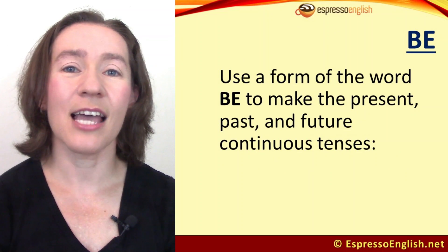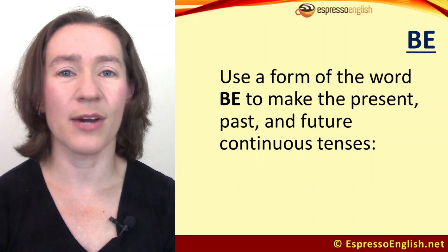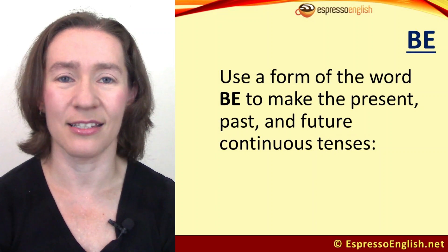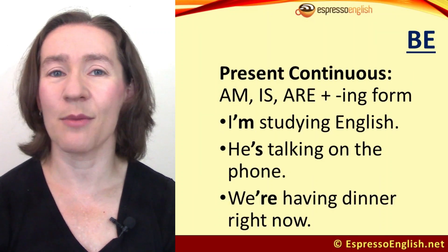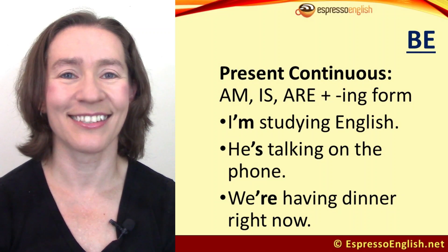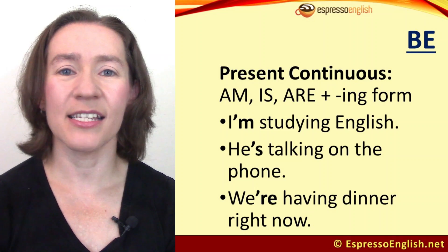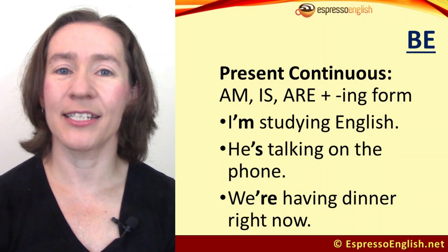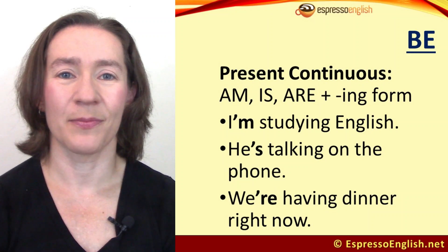The next helping verb is be. We use a form of the word be to make the present, past, and future continuous tenses. For the present continuous, use am, is, or are plus the ing form of the verb. For example: I'm studying English. He's talking on the phone. We're having dinner right now. As you can see, we often make it into the short form.